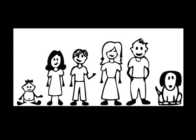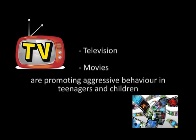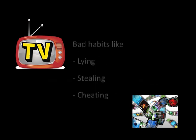Family and cultural causes: a person is closely related to his family from birth. The behaviour and thoughts of a person are influenced by his family. In families where there is no parental affection, or where members are constantly involved in conflicts or criminal activities, the child grows up imbibing these qualities and ends up committing crimes. Television and movies also promote aggressive behaviour in teenagers and children, with bad habits like lying, stealing, and cheating resulting from watching such programmes.